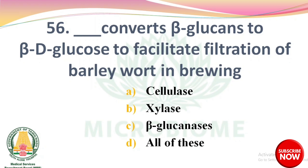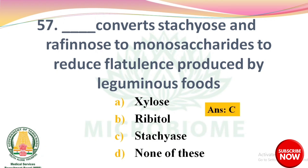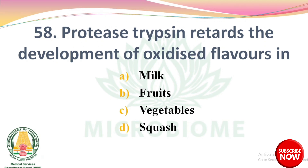Next question: dash converts beta-glucans to beta-D-glucose to facilitate the filtration of barley and oat in brewing. Options: cellulase, silase, beta-glucanases, all of these. The right answer is Option C: beta-glucanases. Next question: dash converts stachyose and raffinose to monosaccharides to reduce the flatulence produced by leguminous foods. Options: xylose, ribitol, stachyase, none of these. The right answer is Option C: stachyase. Next question: protease trypsin retards the development of oxidized flavors in options: milk, fruits, vegetables, squash. The right answer is Option A: milk.